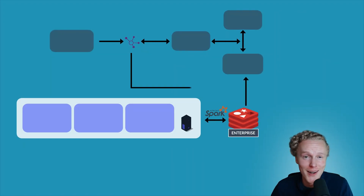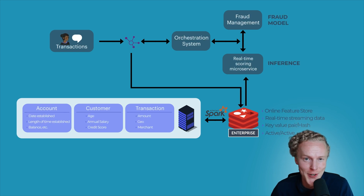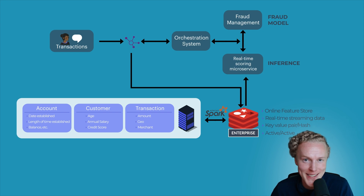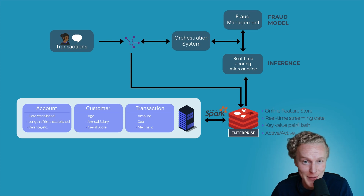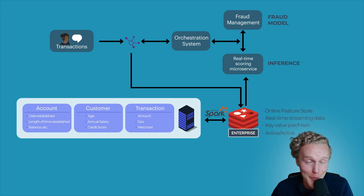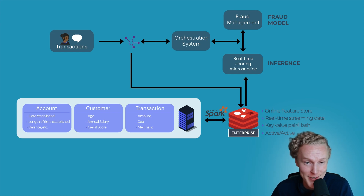Now on to our last solution: transaction risk scoring. Similar to validating identities, we are now verifying transactions based on machine learning risk scoring models to determine whether the transaction is fraudulent or not. You've probably received a text or notification from your bank or credit card company when they've detected a plausible fraudulent transaction. If you try to buy something and you get that message or alert in real time, chances are your bank is using Redis.